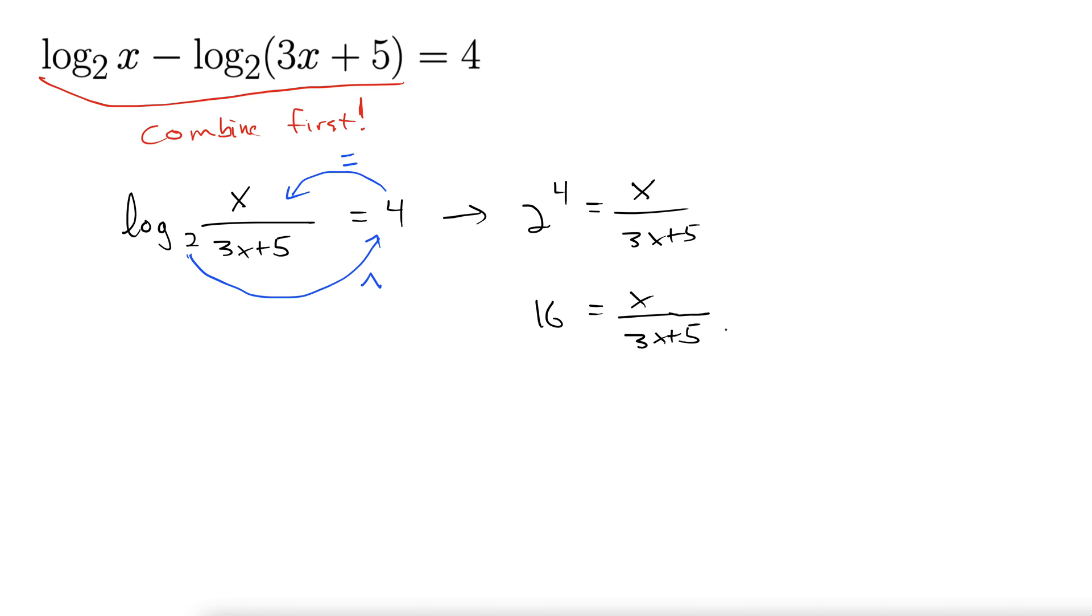Maybe you're wondering how in the world we solve this. Well, remember, we can bring this up to the other side like so. I'm going to put parentheses around it to remind us to multiply the entire thing. That's a common mistake here. People bring it up and forget that this 16 has to go through to this entire term. So we get 16 times 3x plus 5 equals x.